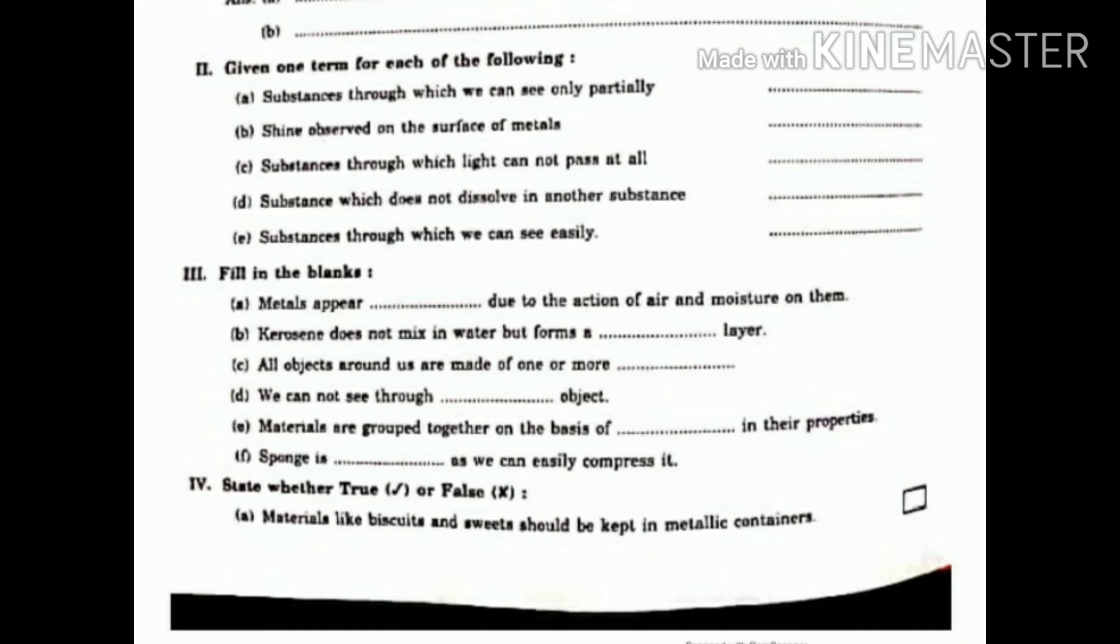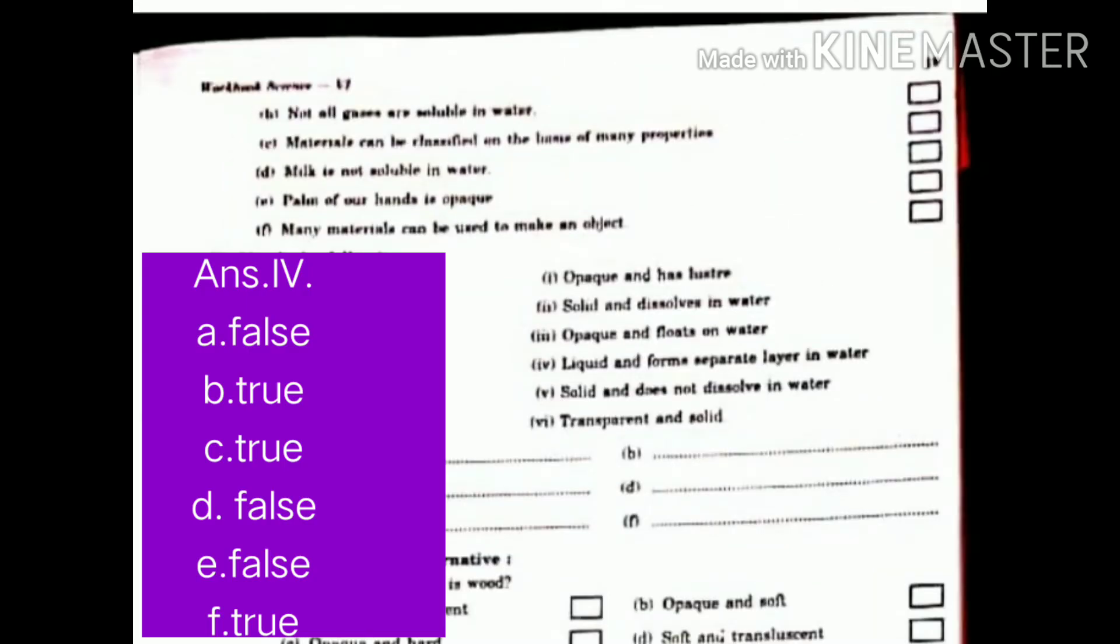A. Materials like biscuits and sweets should be kept in metallic container. False. B. Not all gases are soluble in water. True. C. Materials can be classified on the basis of many properties. True.